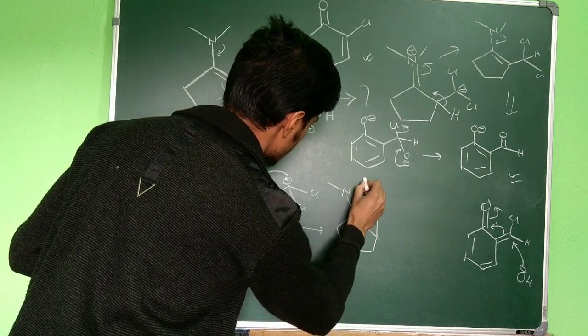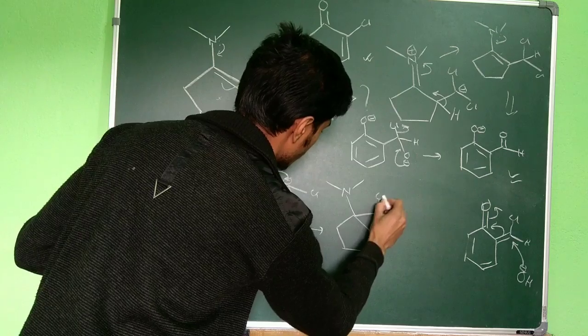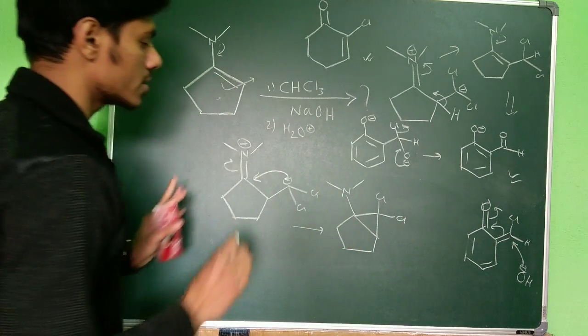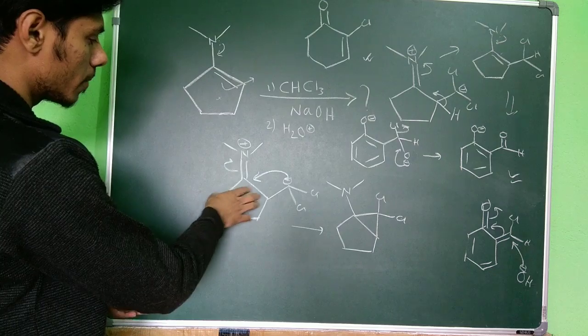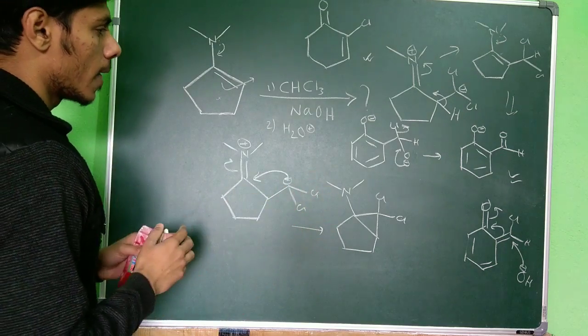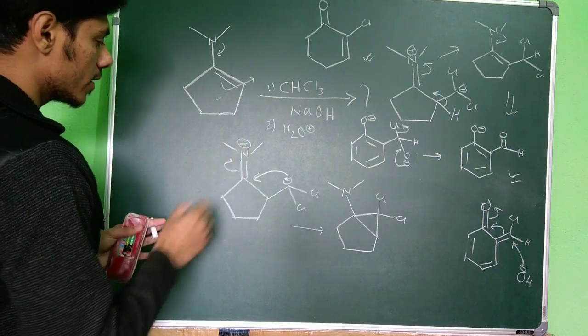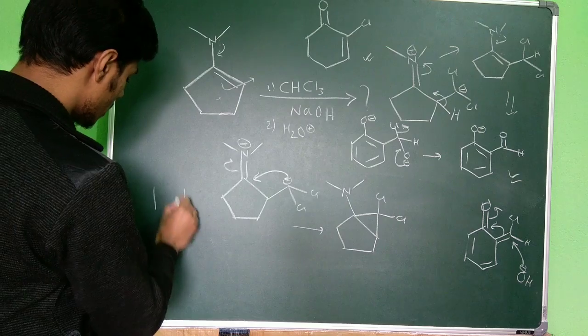So this iminium cation can attack here. Although it looks like a strange three-membered ring, you know kinetically three-membered ring formation is very much favorable. Although it's not thermodynamically favorable, kinetically this reaction is very much favorable.